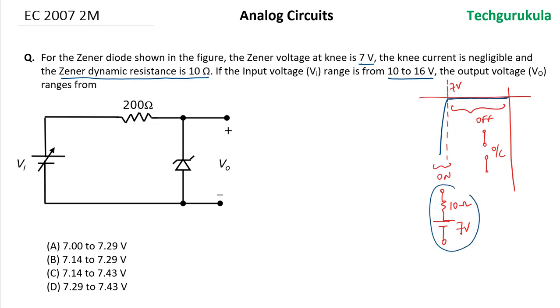Now for the first case when Vi is equal to 10 volts, we have some current flowing through this. That current will be equal to 10 volts minus 7 volts divided by the entire resistance there, which is 210 ohms. So this value